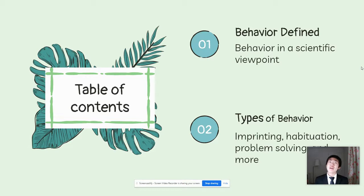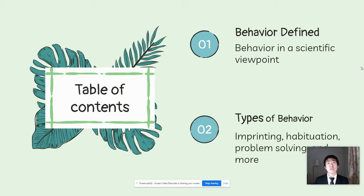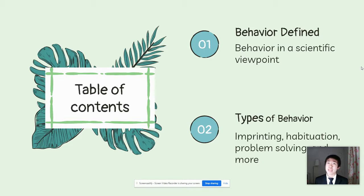We'll first learn how to define behavior in a scientific concept. When you hear the word behavior, you might think of your best friend's demeanor or how you act under a certain situation. However, the scientific definition of behavior is wonderfully simple but wonderfully complex all at the same time. After we have defined behavior, we'll be moving on to some types of animal behaviors that are most prominent in the natural world.